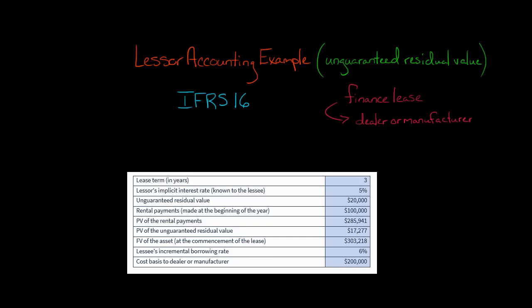Let's get into the specifics. We've got a lease that begins on January 1st, 2022. It's a three-year lease with a 5% implicit interest rate for the lessor — so this is what we're going to use for discounting present value. The lessor would always use their implicit interest rate to discount things. Now we've got an unguaranteed residual value — this is the difference from the last video — of $20,000. So the lessor is thinking that when they get this asset back from the lessee at the end of three years, it's going to be worth $20,000.